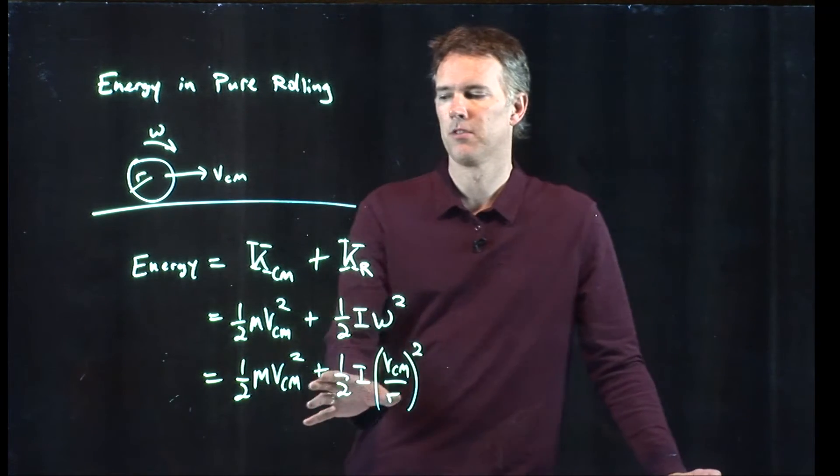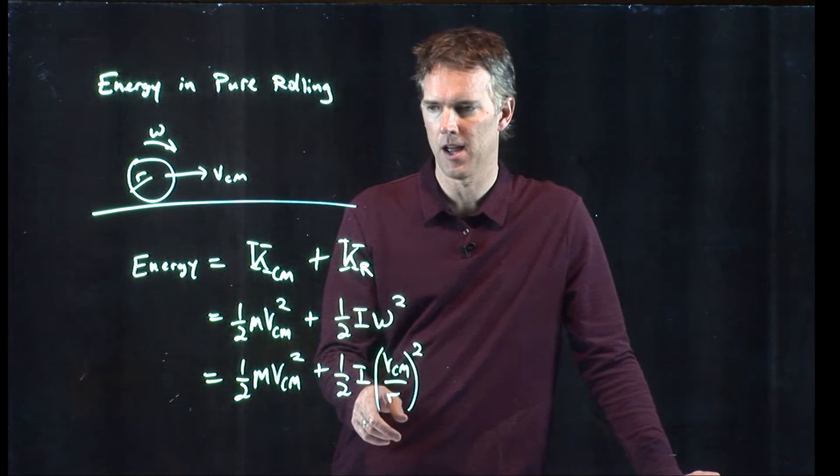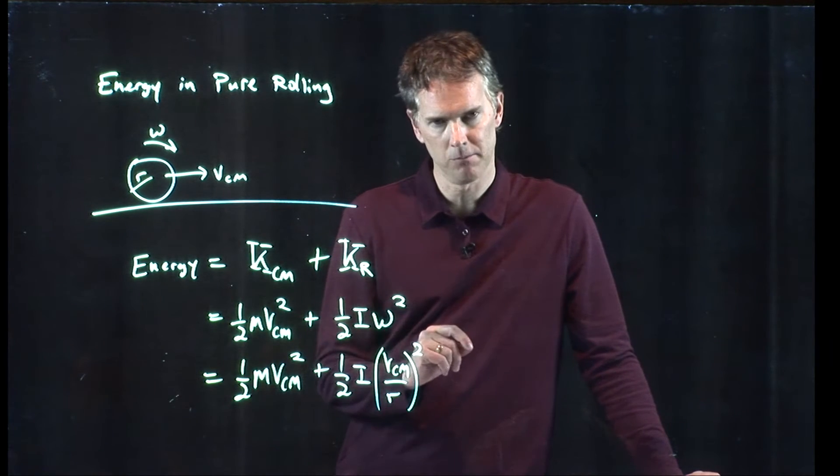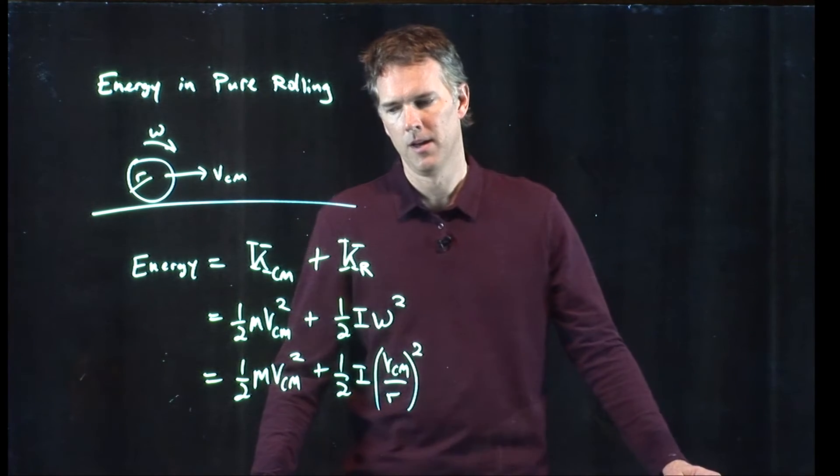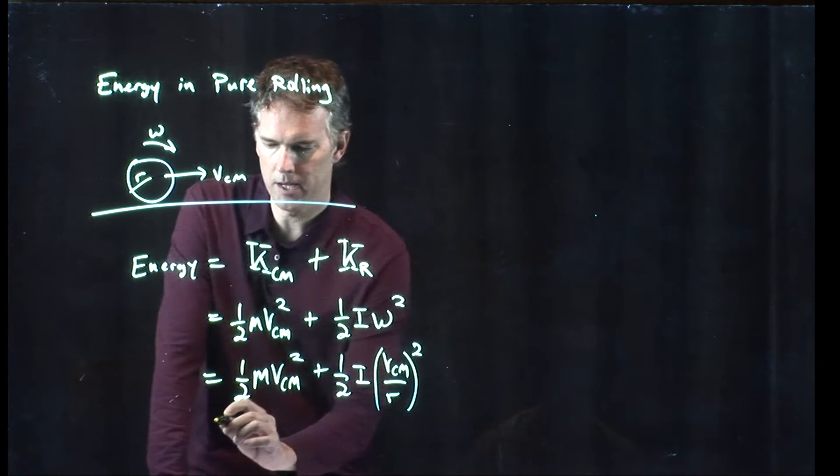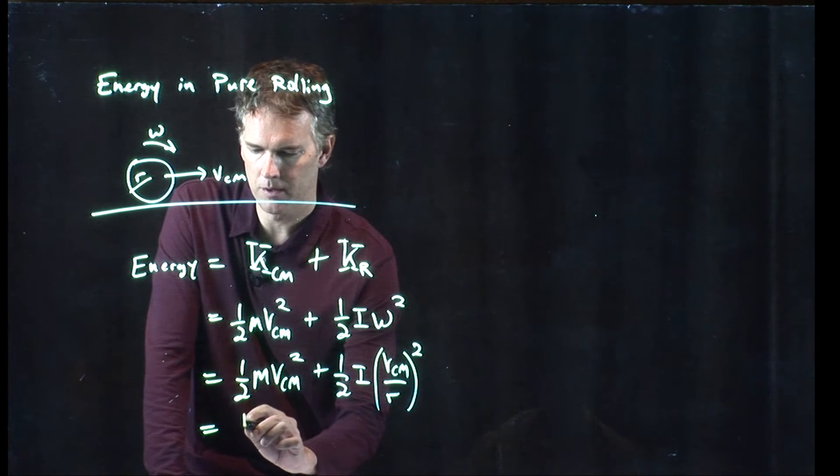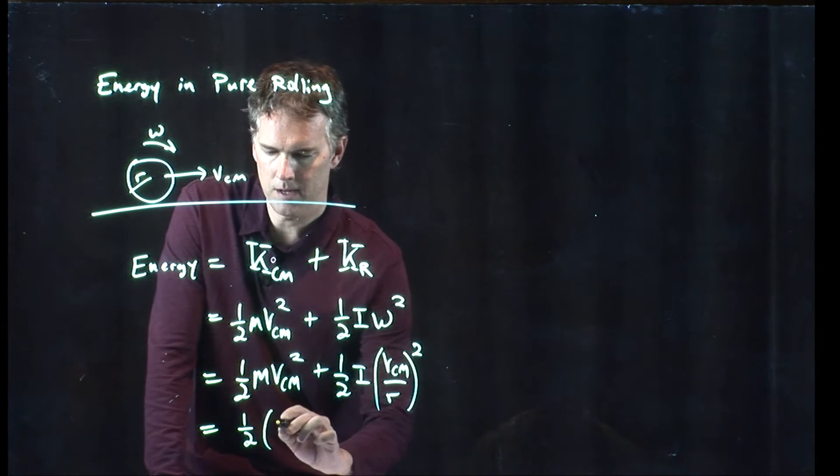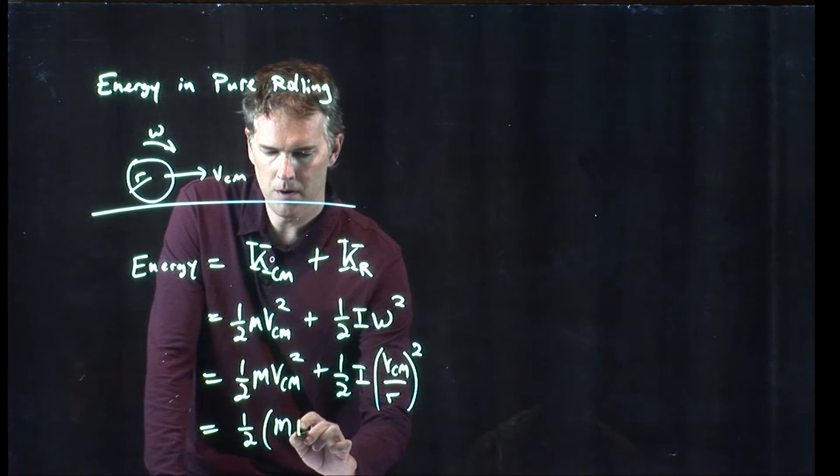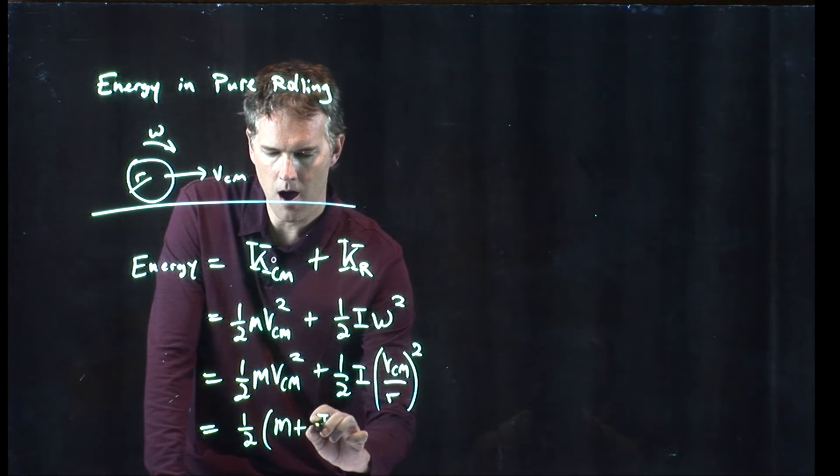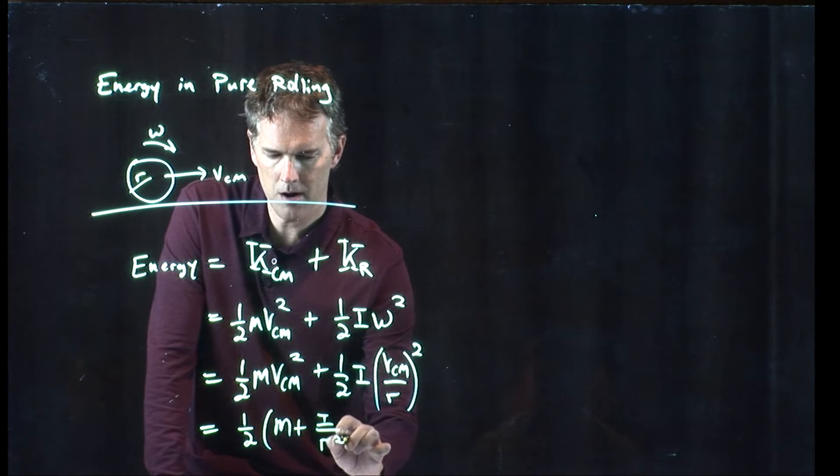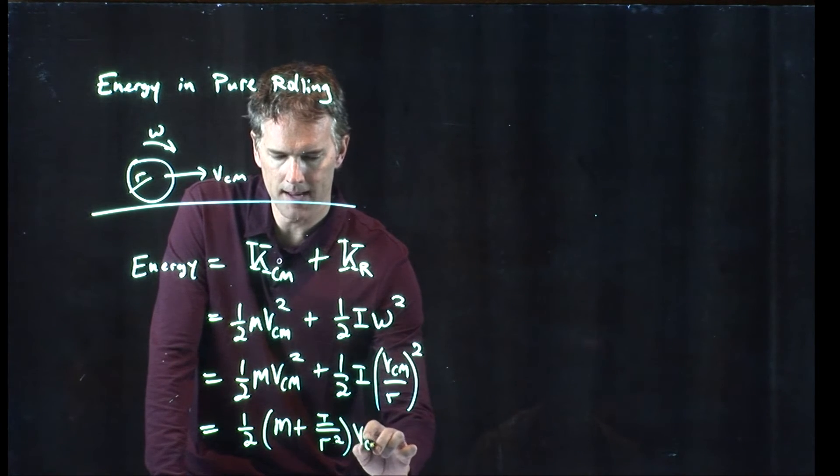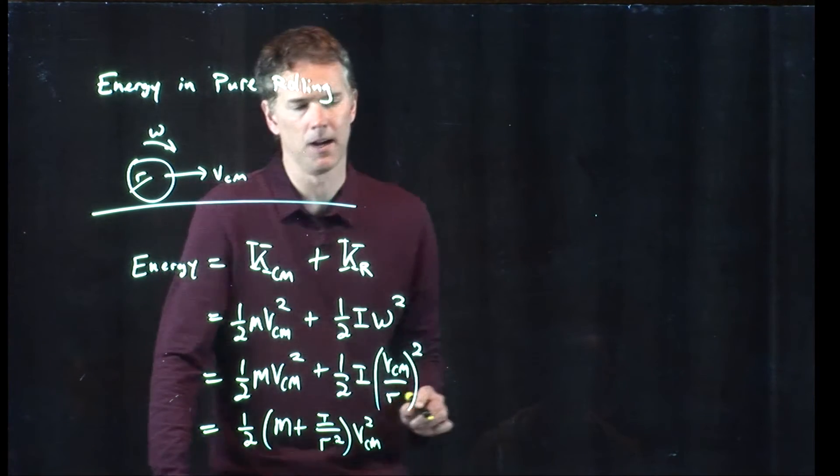And now we have a bunch of terms that are the same. One-half is the same in both of them, v_cm squared is the same in both of them. And so we can write down the total energy now as the following: one-half times the quantity m plus I over r squared, all of that times v_cm squared.